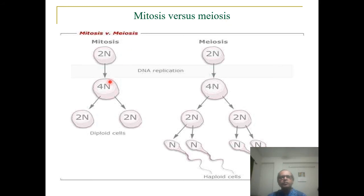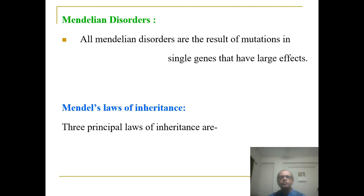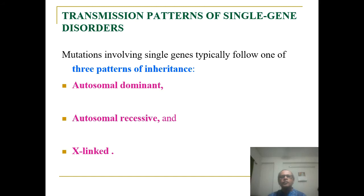Mitosis versus meiosis: in mitosis, diploid cells are produced, whereas in meiosis, haploid cells are produced. Mendelian disorders result from mutations in single genes that have large effects. The transmission pattern of single gene disorders: mutations involving a single gene typically follow one of three patterns of inheritance — number one is autosomal dominant, number two is autosomal recessive, and number three is X-linked.